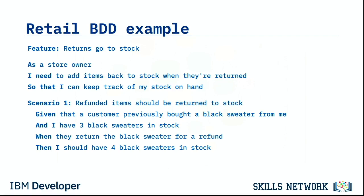Or maybe there's another way it could happen — then you would document a new scenario for the 'Returns go to stock' feature. The point is your stakeholders are actually helping you define the behavior of the system in a formal syntax that you can now execute test cases against. BDD tools like Behave and Cucumber can consume this document with no further editing or manipulation and execute test cases to prove that the system does indeed exhibit the behavior.